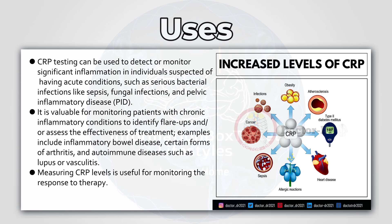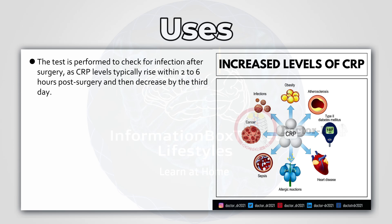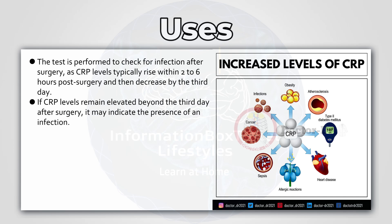Measuring C-reactive protein levels is useful for monitoring the response to therapy. The test is also performed to check for infection after surgery, as C-reactive protein levels typically rise within two to six hours post-surgery and then decrease by the third day. If C-reactive protein levels remain elevated beyond the third day after surgery, it may indicate the presence of an infection.